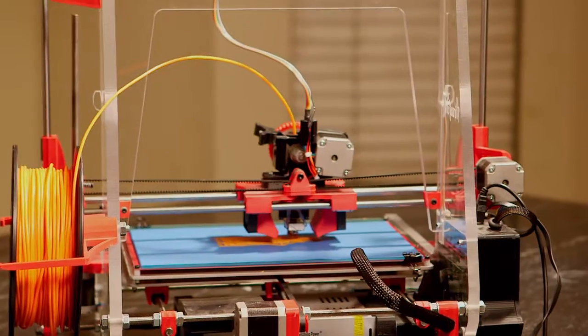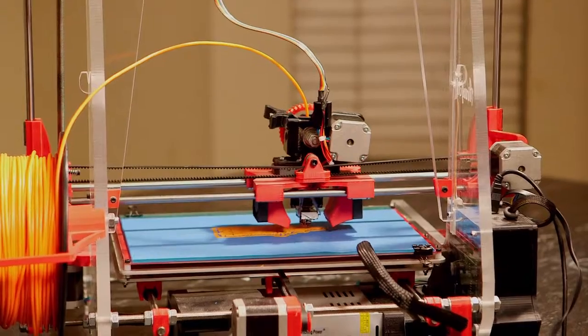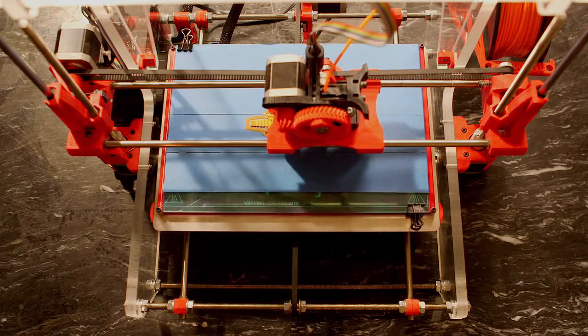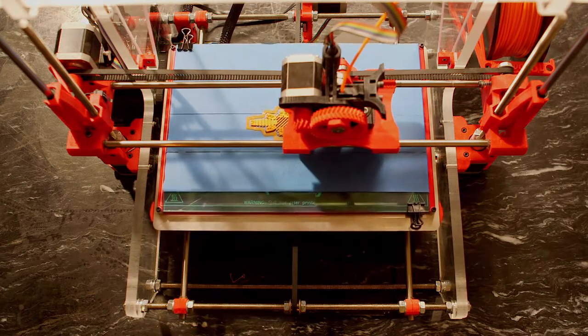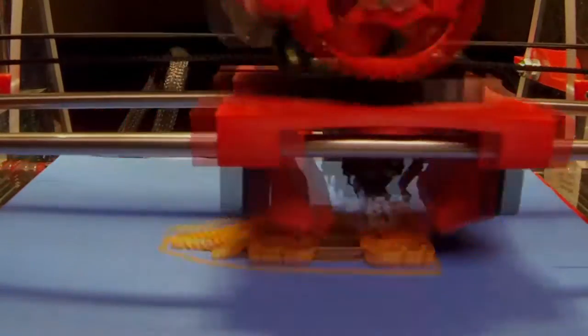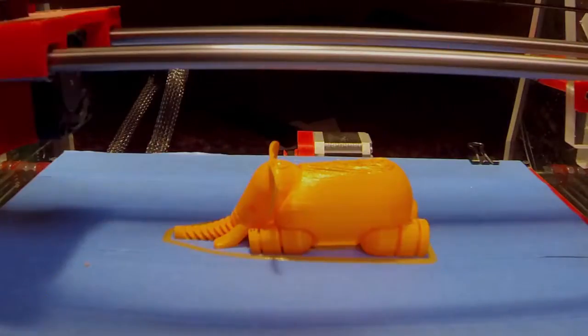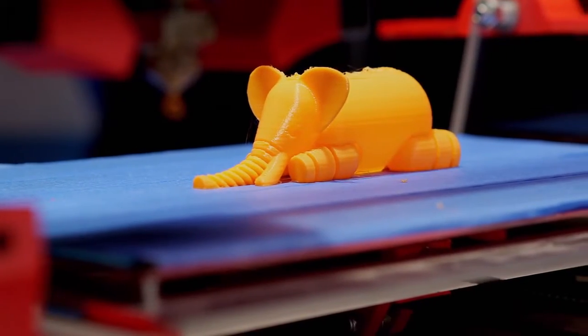So how a 3D printer works is that it prints this kind of gooey paste on a hotbed plate, and it does it layer by layer. After a few minutes to a few seconds, it solidifies and combines itself to build whatever object you want it to be.